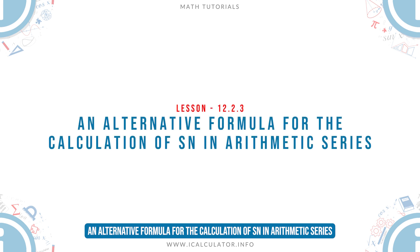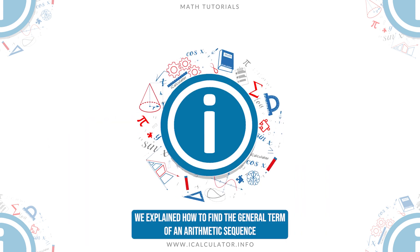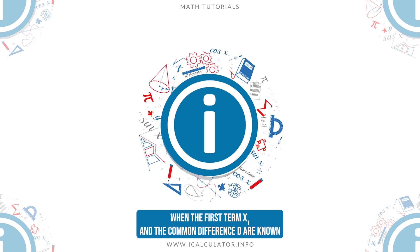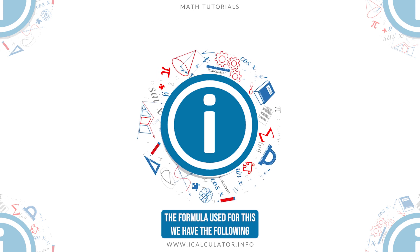An alternative formula for the calculation of Sn in arithmetic series. In the previous tutorial, we explained how to find the general term of an arithmetic sequence when the first term x1 and the common difference d are known. The formula used for this is shown on screen.